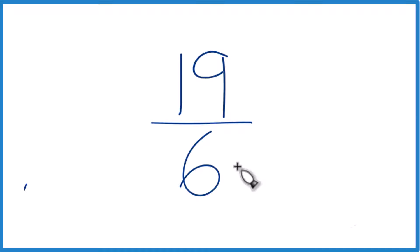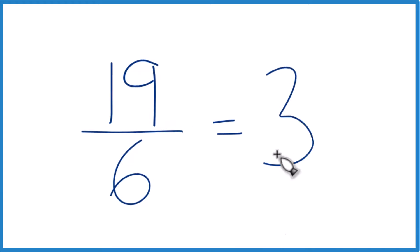To do that, we want to know how many times 6 goes into 19, so the denominator goes into the numerator. 3 times 6 is 18. It's pretty close. It doesn't go over. So let's say our whole number will be 3.